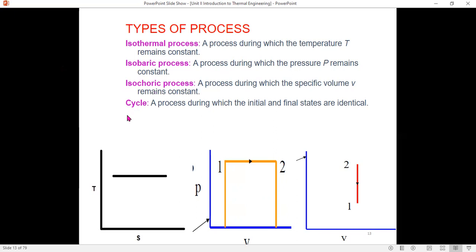These are basic plots. This is a TS plot, temperature versus entropy. You can see temperature is constant, which is isothermal. In the PV plot, pressure versus volume, this one-to-two process shows constant pressure, and this shows constant volume represented by a vertical line along V.